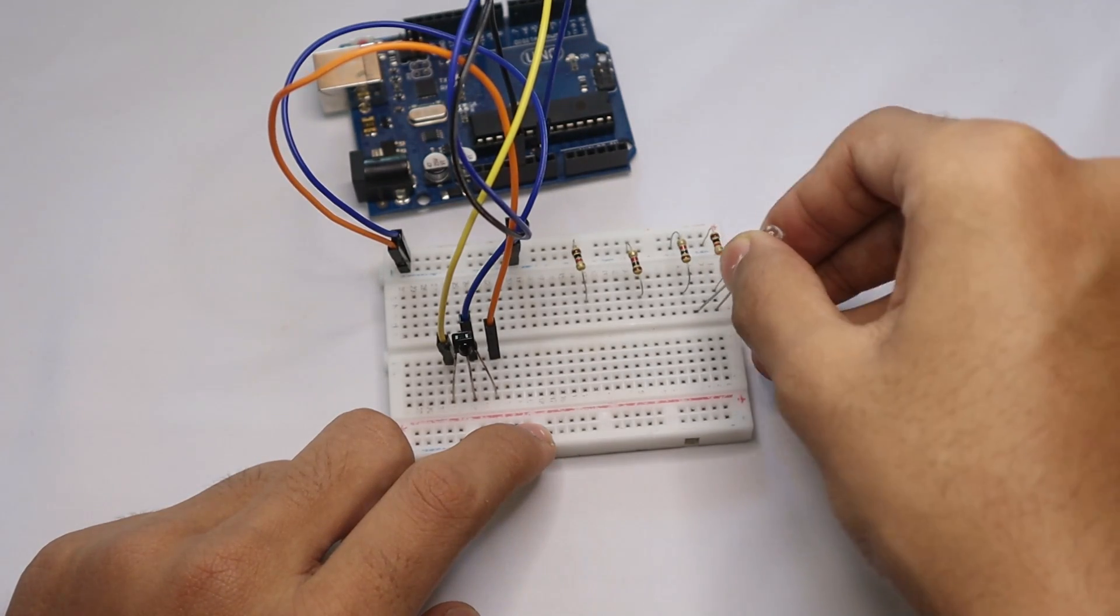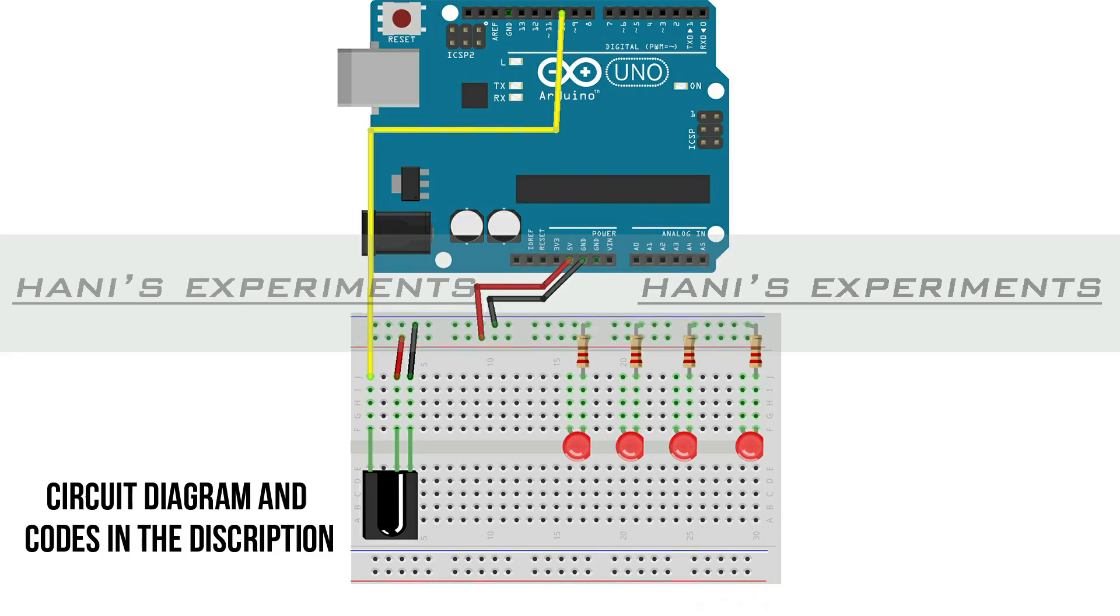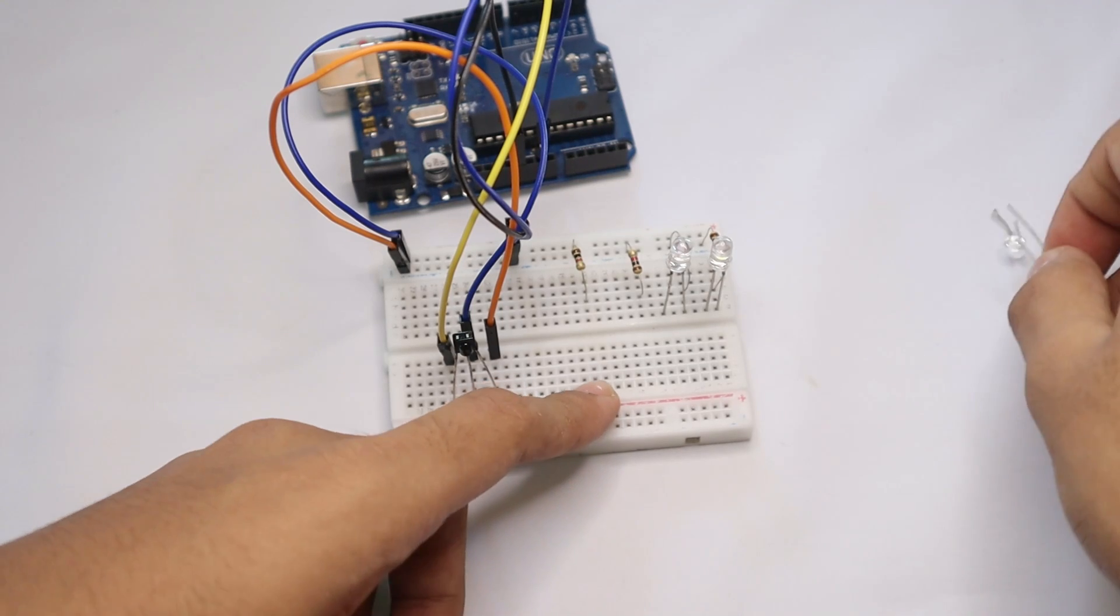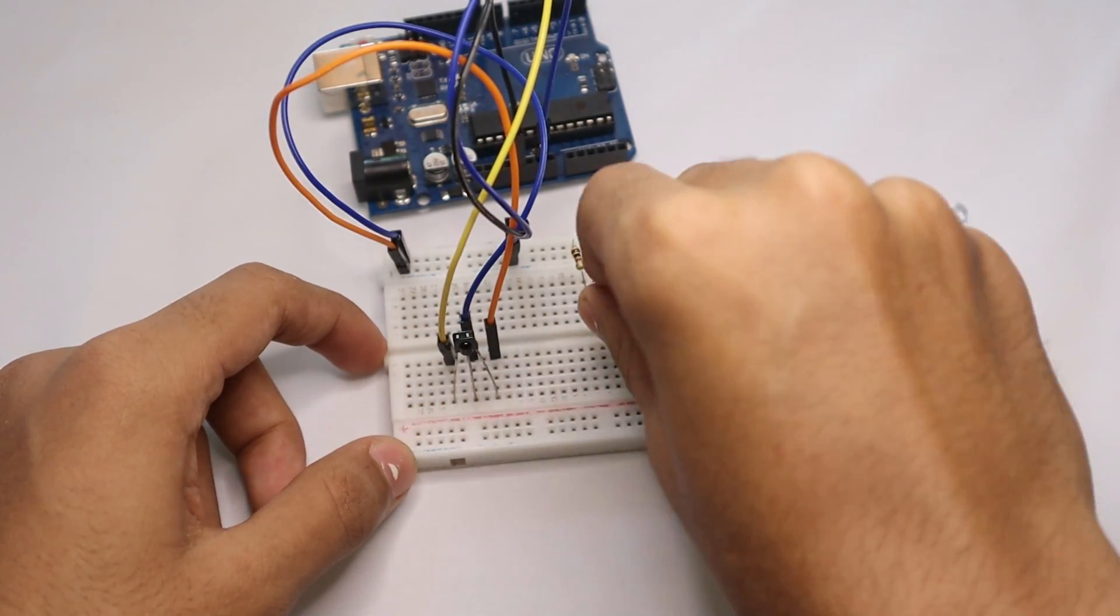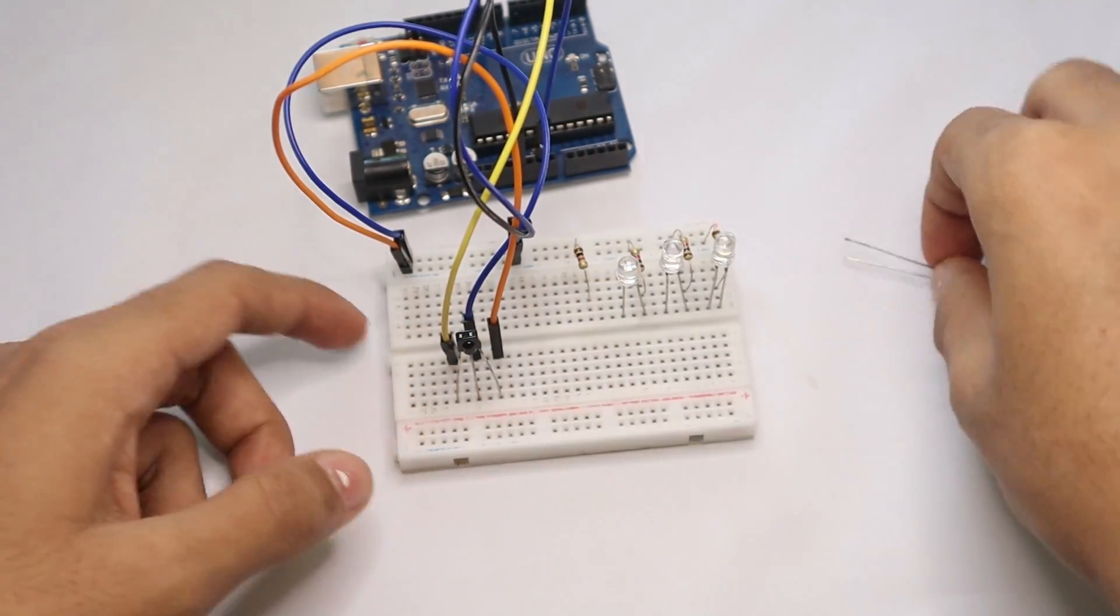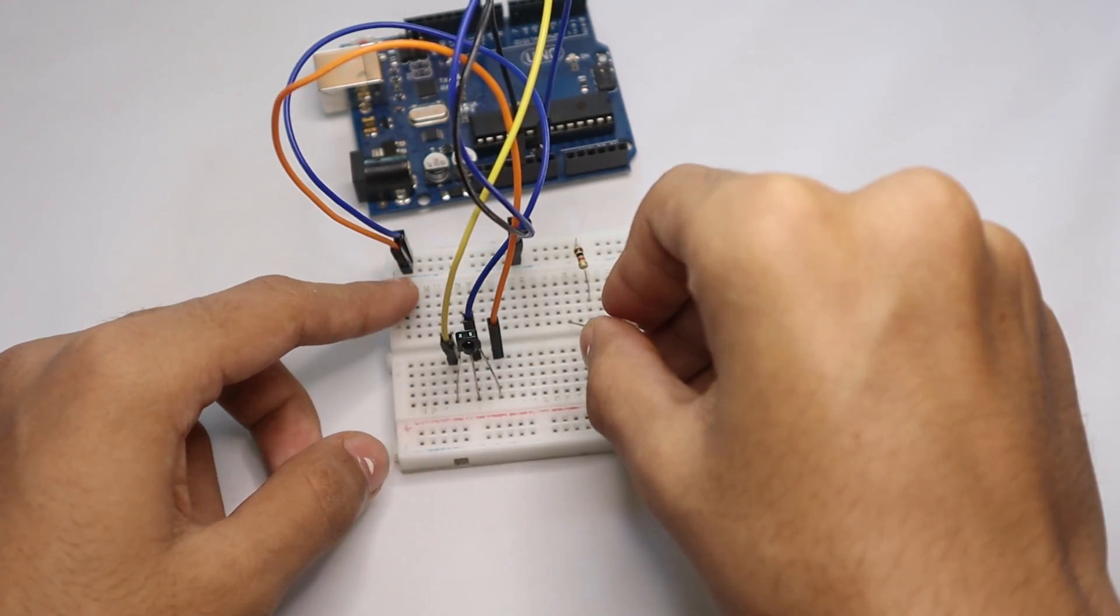Now this is the circuit diagram how you need to connect the LEDs to the resistors. If you want to buy any of the parts that I am using here, I will give the links in the description so you can buy it under there.